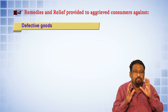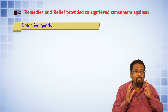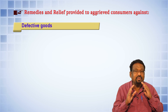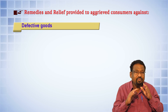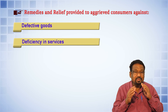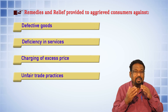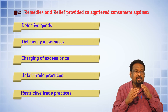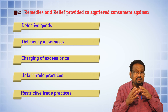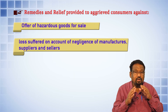The remedies provided to aggrieved consumers are: one, remedy against defective goods sold or purchased by the consumer; two, deficiency in services; three, charging of excessive price; four, adoption of unfair trade practices; five, adoption of restrictive trade practices; six, offer of hazardous goods for sale; and seven, loss suffered on account of negligence of manufacturers, suppliers, and sellers.